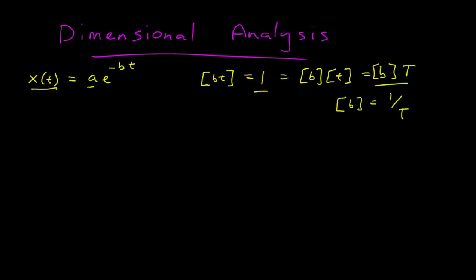So what is the dimension of a? e is the base of the natural logarithm, and it is simply a number. It doesn't have any dimensions, so e to the minus bt is also dimensionless. Our position function gives us a position, and that has dimensions of length, so length equals the dimensions of a times the dimensions of this, which is dimensionless, and so a has dimensions of length.